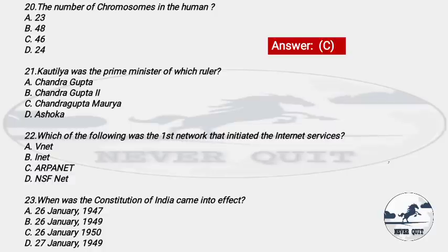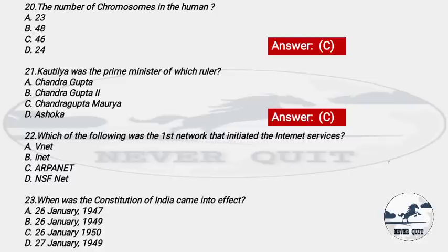Question 21: Kautilya was the prime minister of which ruler? Options include Chandragupta 2nd, Chandragupta Maurya, and Ashoka. The right answer is option C — Chandragupta Maurya. Kautilya was the prime minister (head of ministers) of Chandragupta Maurya.